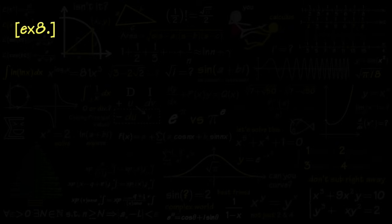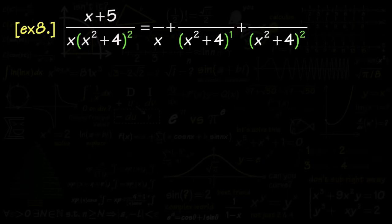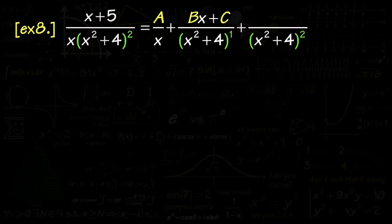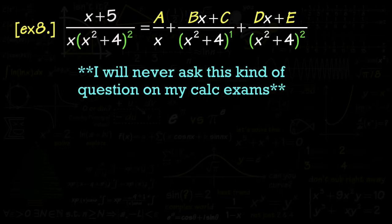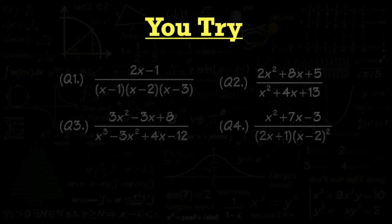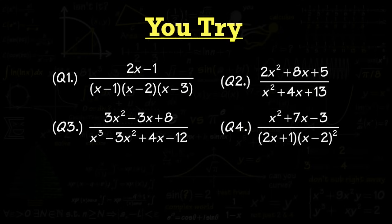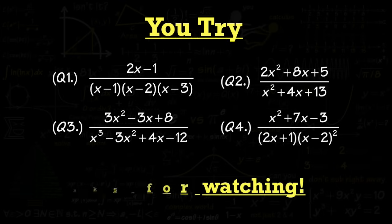The last example combines a repeating factor with an irreducible quadratic: (x+5) over x times (x squared + 4) squared. Build up the powers: blank over x, blank over (x squared + 4), and blank over (x squared + 4) squared. The first fraction gets A; the second gets Bx plus C since the denominator is an irreducible quadratic; the last keeps the same kind — Dx plus E. These questions are very involved, so hopefully all these examples are helpful. Try the four practice questions in the description, including full integration solutions. Thank you for watching!